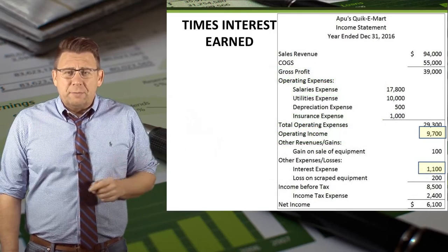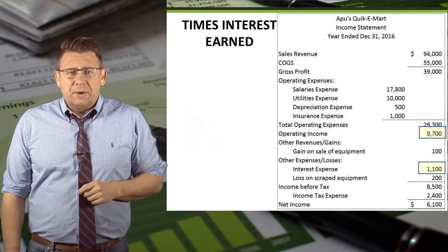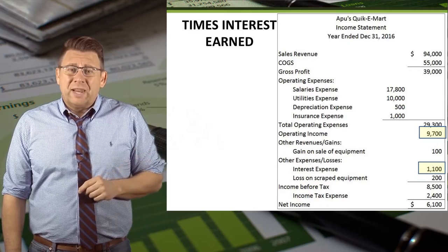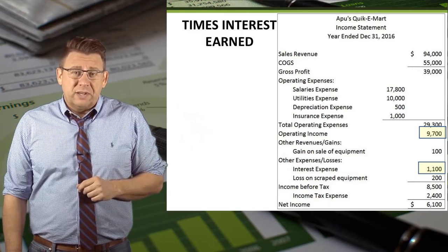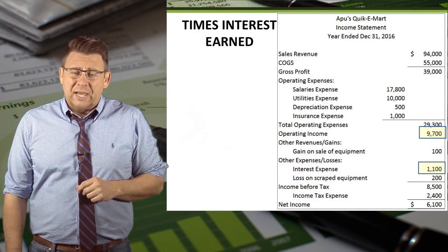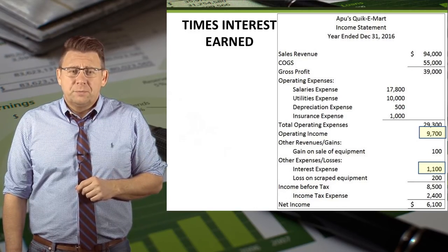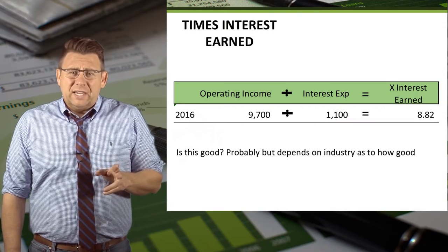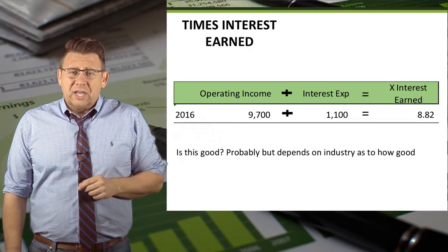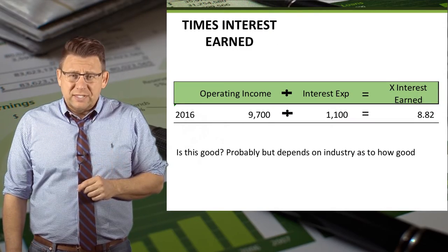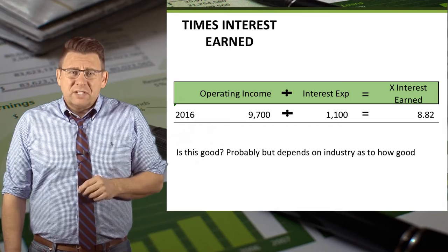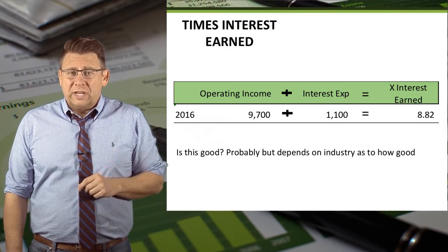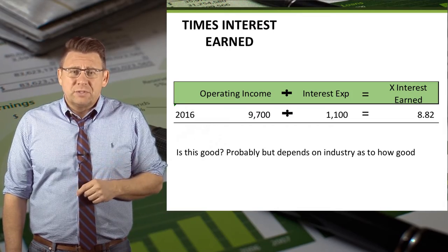Here's an income statement of a sample company. We'll use the highlighted operating income and interest expense to determine times interest earned. For 2016, operating income divided by interest expense gives us times interest earned of 8.82 times.